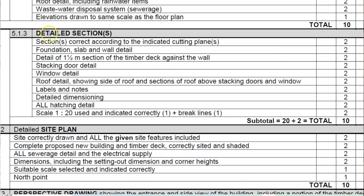Let's quickly look at the actual checklist for the detail section — this is going to be numbered 5.1.3, Detail Sections. This can most likely fit on one A3 page. The sections must be correct according to the indicated cutting planes, and I hope you haven't yet added them into your floor plan, because this is actually when we're going to add those cutting planes.